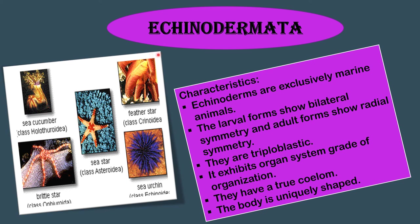The last phylum is Echinodermata. Echinoderms are exclusively marine animals. The larval forms show bilateral symmetry while adult forms show radial symmetry. They are triploblastic and exhibit organ-system grade of organization. They have a true coelom and a uniquely shaped body. Examples include sea star, feather star, sea urchin, brittle star and sea cucumber.